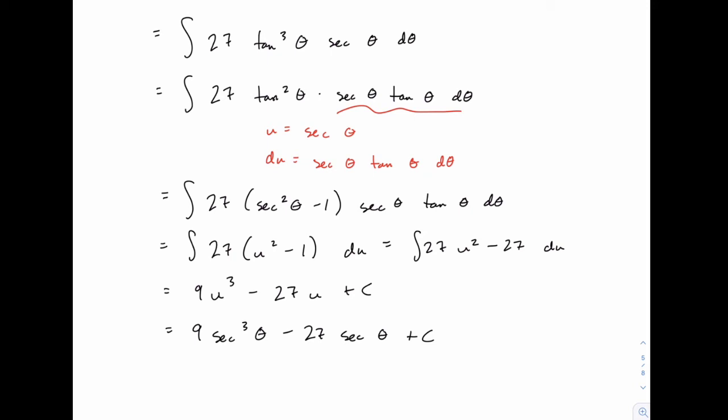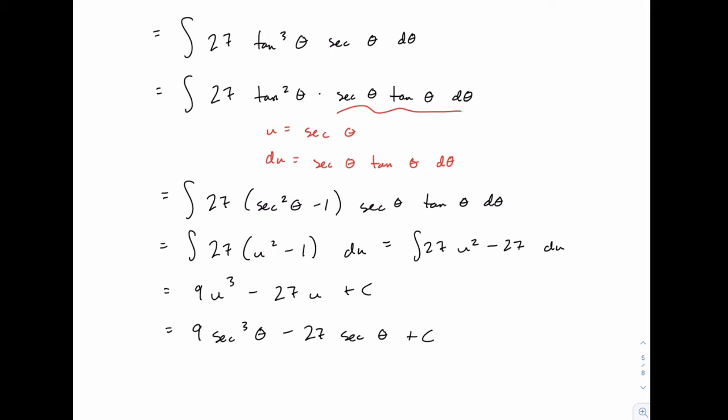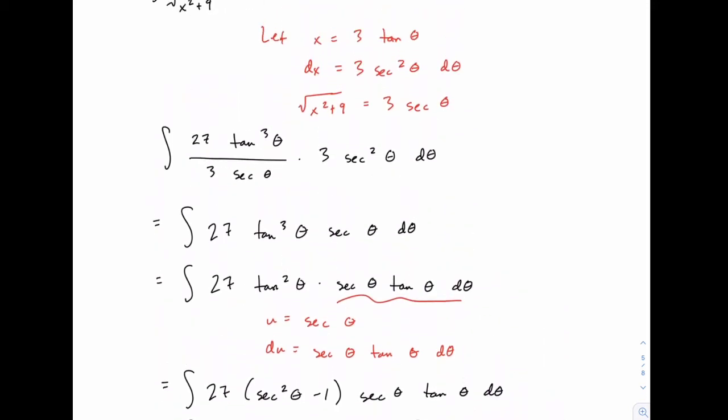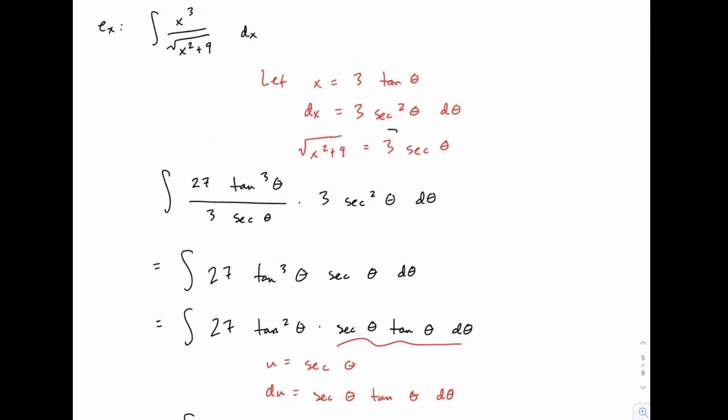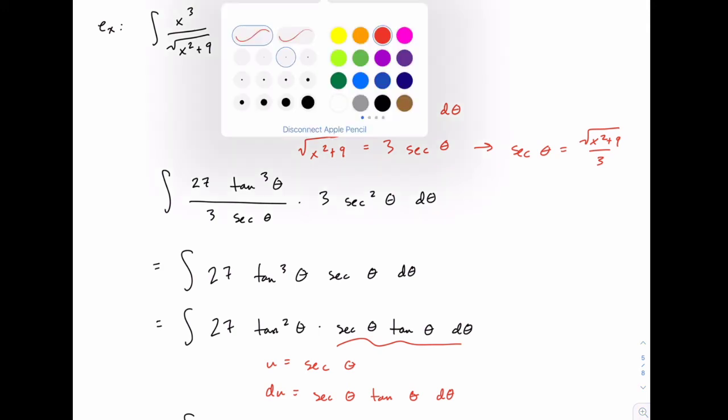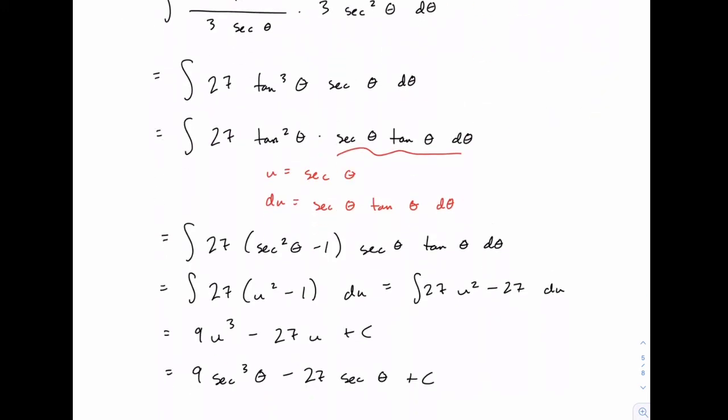Now notice all we have in the answer is secant theta. So we just need to come back to where we have a connection between secant theta and x, and notice right here: 3 secant theta equals the square root of x squared plus 9. So the secant of theta equals the square root of x squared plus 9 divided by 3. So everywhere we have secant of theta in our answer we can replace it with this square root divided by 3.